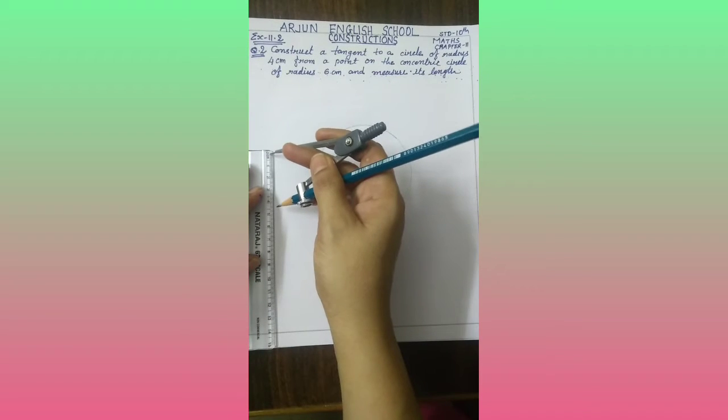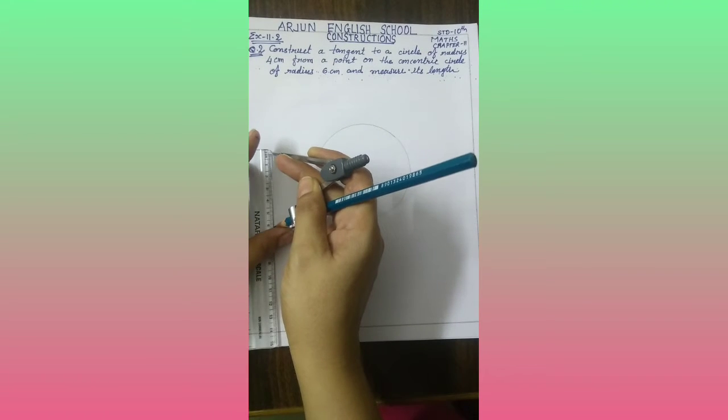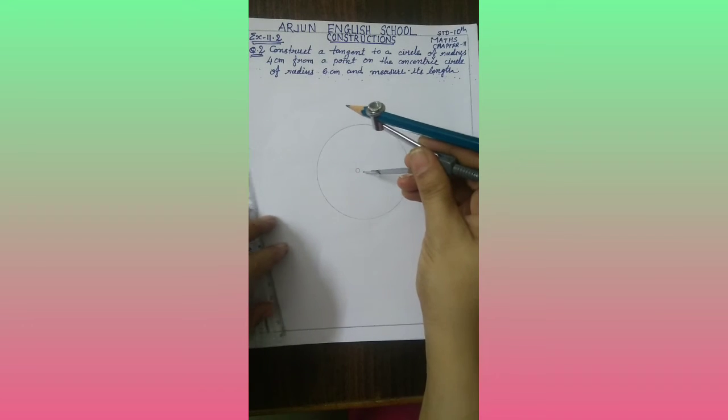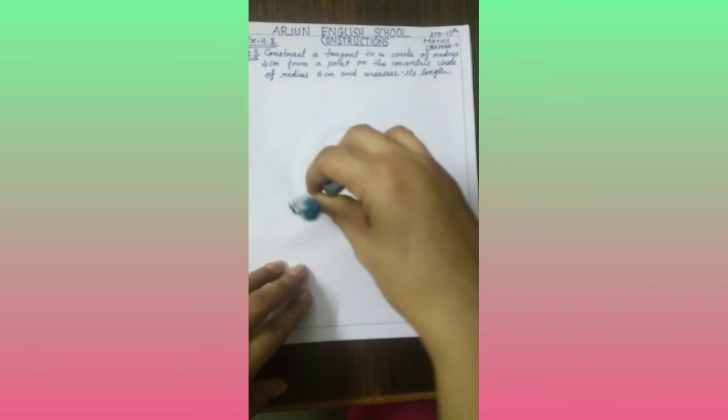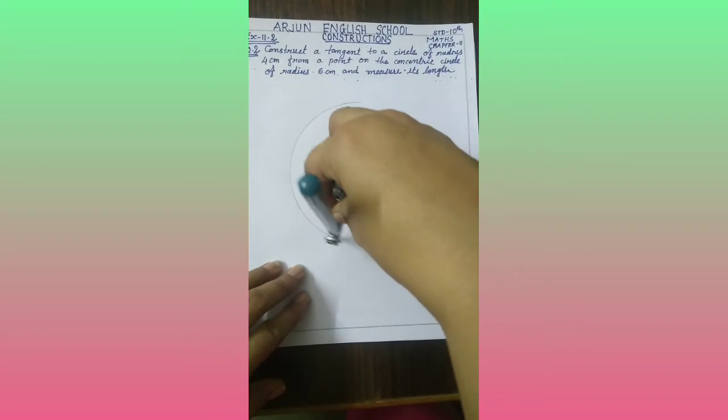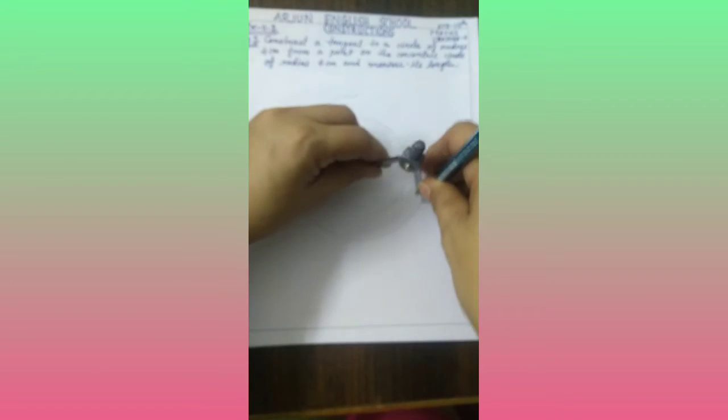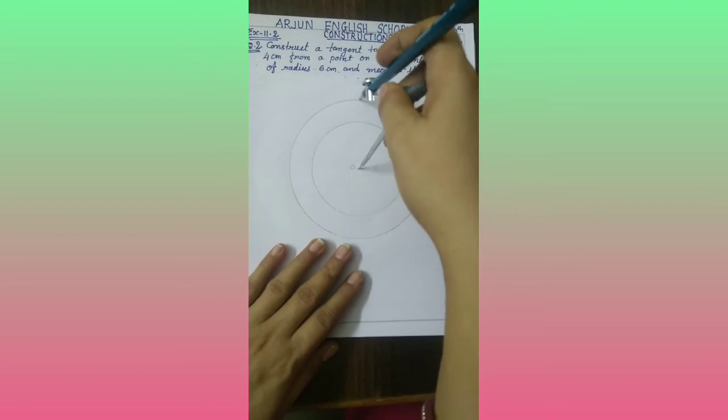Now take radius of 6 cm. Same center but radius of 6 cm. Draw a circle with the help of your rounder.